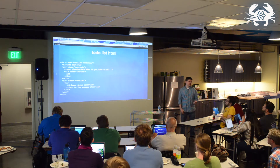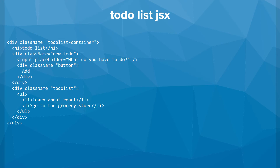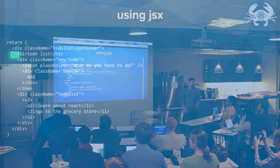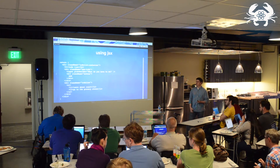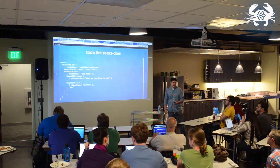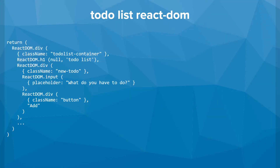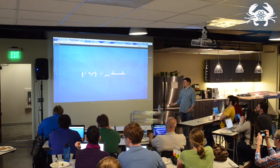JSX allows us to write our view — our HTML — in the JavaScript code. The only thing that changes is that class becomes className, because you can't use class in JavaScript. We get to put it right in our JavaScript, so we can have a function that determines HTML and that gets rendered down using Webpack and the transpilers. But there's a problem: browsers don't have JSX support. Alternatives exist but they're not that great — you can use React DOM to manually create the entire HTML structure, but you don't really get to see what it's going to look like. It's hard to visualize and hard to work with.